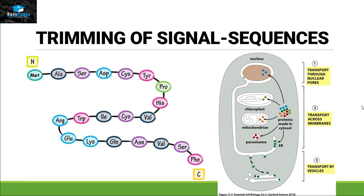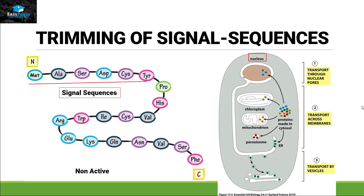The second type of modification is called trimming of the signal sequence. When a protein comes out of the process of translation it is non-active. The first 15–30 amino acids present on the N-terminal of that protein are called the signal sequence. This signal sequence recognizes whether the protein is going to function inside the nucleus, inside the chloroplast, inside the mitochondria, peroxisomes, or going out of the cell in the form of vesicles. Once that is decided, the signal sequence needs to be terminated in order to make the protein active.